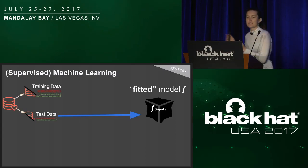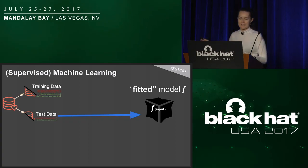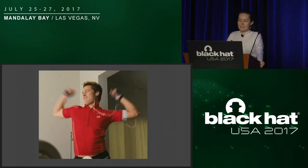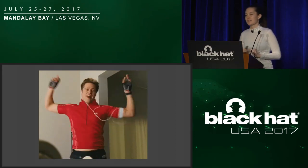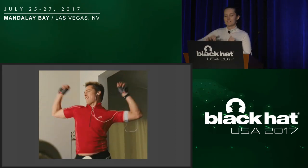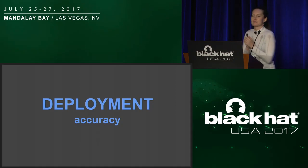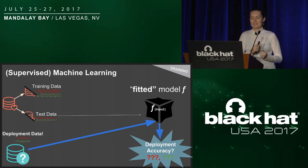Say we have our fitted machine learning model to classify URLs and we hit it with some test data and get back really high, good test accuracy numbers. One response is to dance around and say our model is so fit — but not so fast. Because we live in the world of cybersecurity, we care about deployment accuracy, which can be very different from test accuracy.